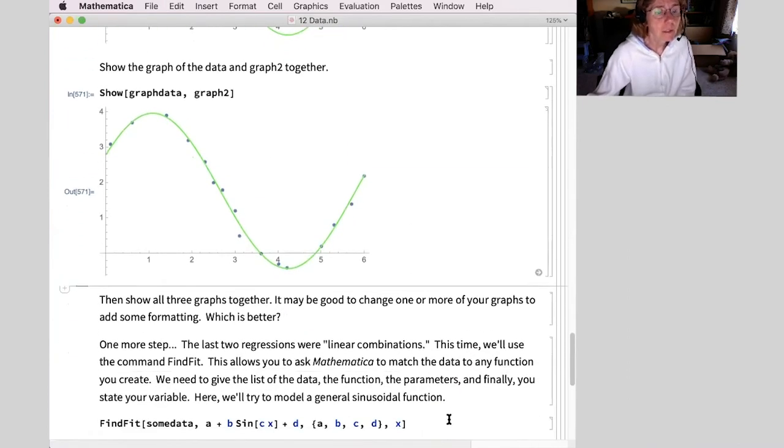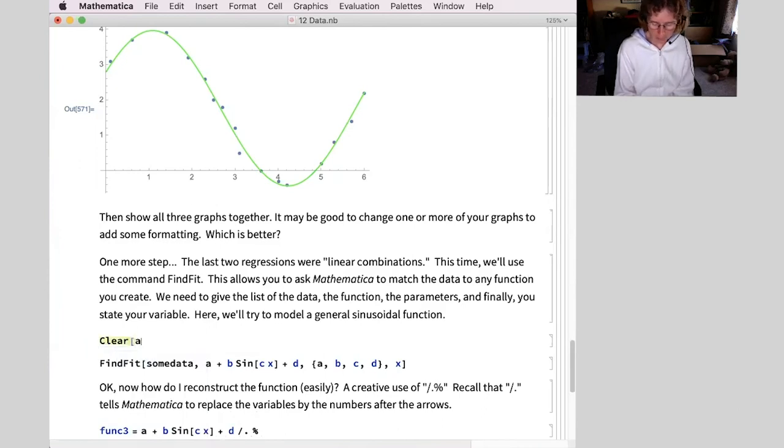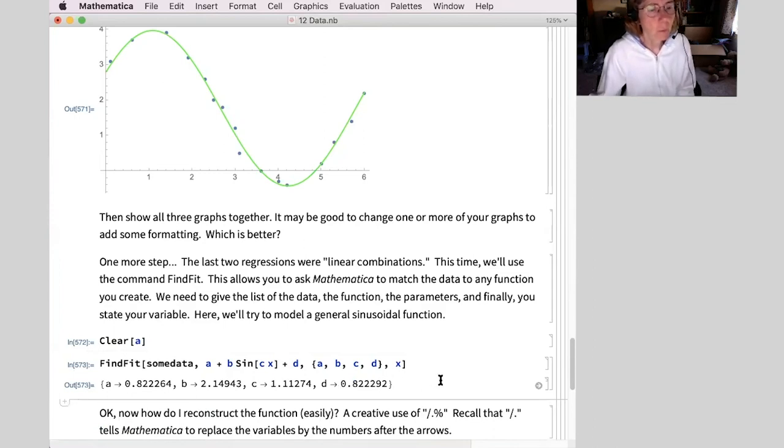Let's do something else in this case. A different command using find fit. Same data. And here I'm putting in the function I'm interested in. So this is going to be a general sinusoidal curve. Here are my four parameters. And then x. I can see that a is colored differently. That's because I defined it above. And I didn't clear it. So we're going to clear a right now. And then that will change to blue. As I can see it here. So the Wolfram language, my computer does not know what a is. So I'm looking at a general sinusoidal curve. Here are my four parameters. And then x as my variable.